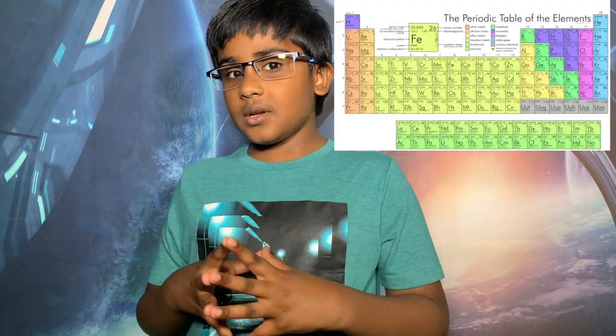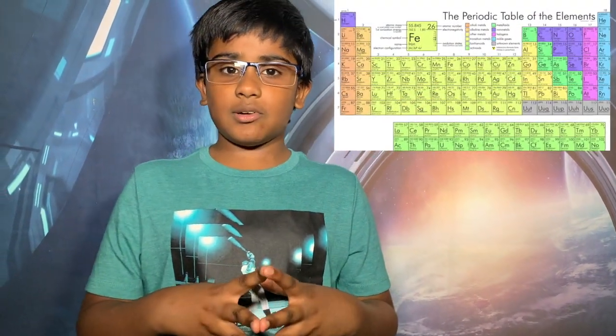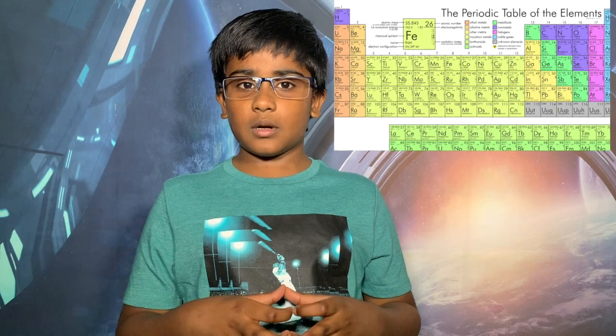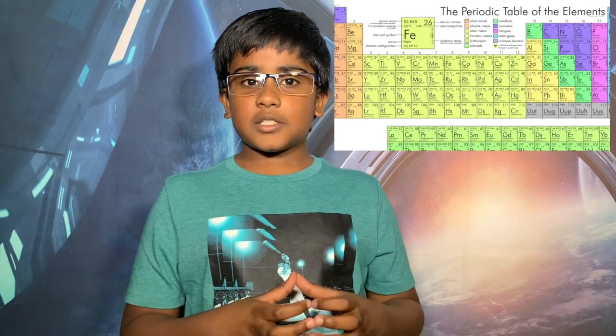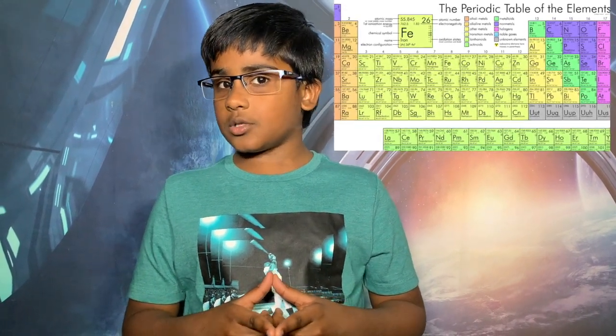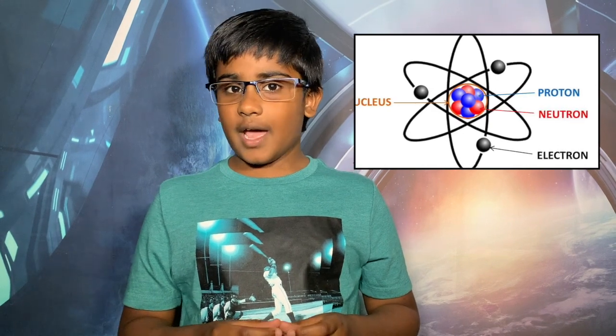What is the periodic table? The periodic table is a way to arrange elements by their atomic number, which is how many protons are in the nucleus of an atom, and their chemical properties. There are 118 elements in the periodic table present today. They can be arranged in rows and columns.